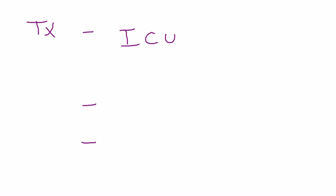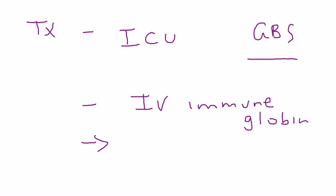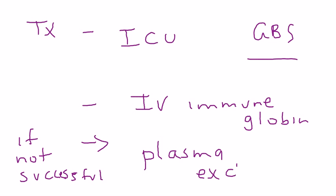The second part of the treatment is IV immunoglobulin. That is what you do first, that's the treatment of choice for GBS. So remember that. And if that doesn't work, if not successful, then you do the last part, the last resort, which is plasma exchange where you literally draw the blood and replace it with fresh blood.